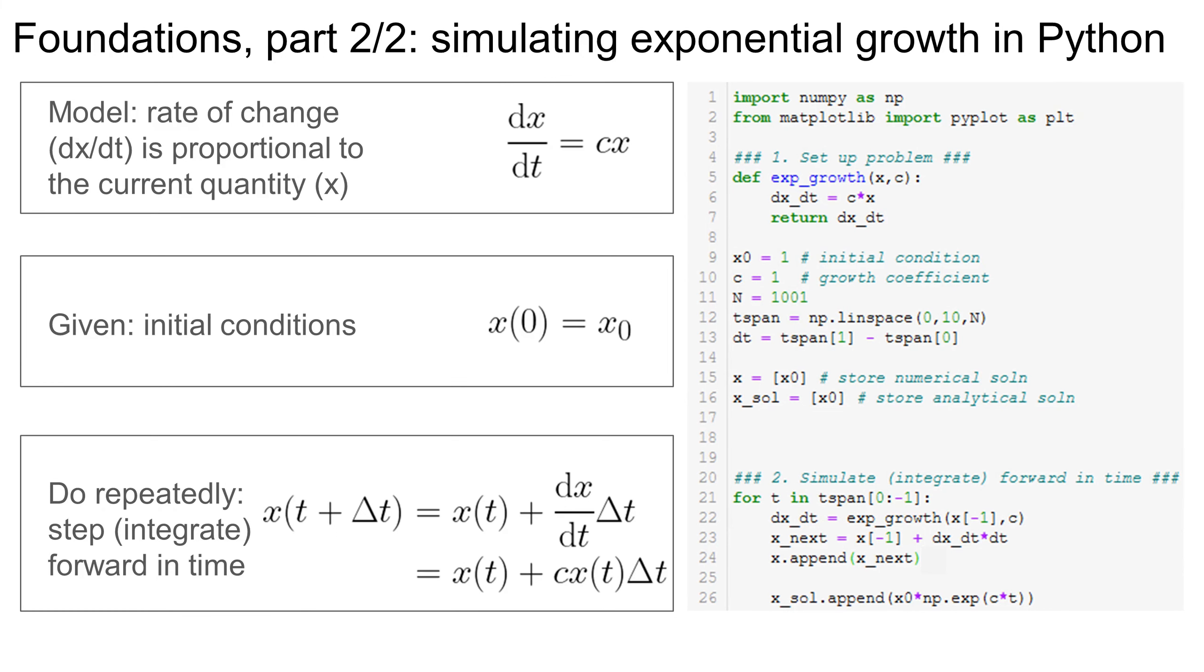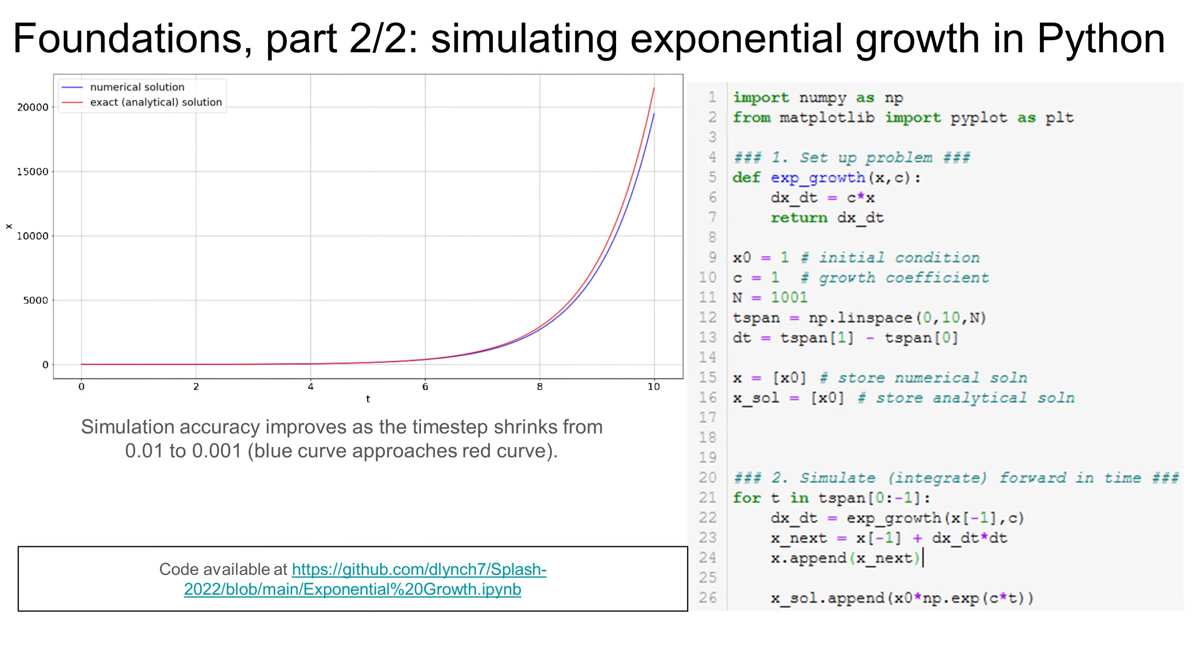Now, let's write a short Python script to do this simulation for us. First, we define our model. Then, we specify the initial rabbit population. After setting up a list of times at which we'd like to predict the rabbit population, we iterate through this list, using our algorithm to predict the population at each time in the list. For this simple model, there's an analytical solution for the population as a function of time, so we'll also compute that at each time step, so we can evaluate our numerical solution.